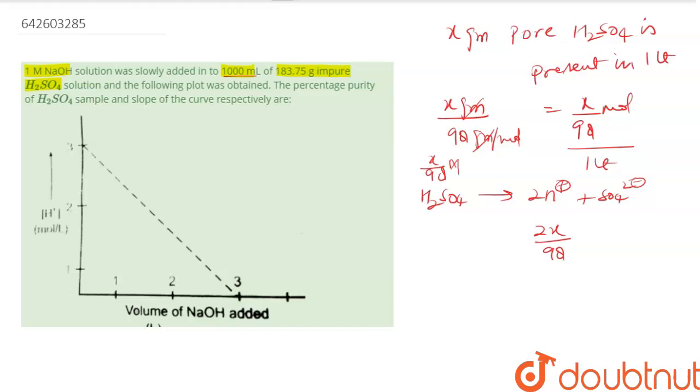So this is x by 298. And when the volume of NaOH is 0, then we can clearly see the concentration of H plus is 3. So this is 2x by 98 into 1 litre, which is this value.